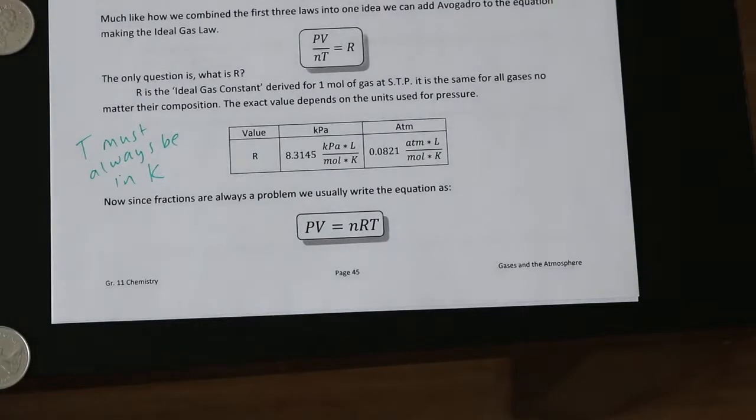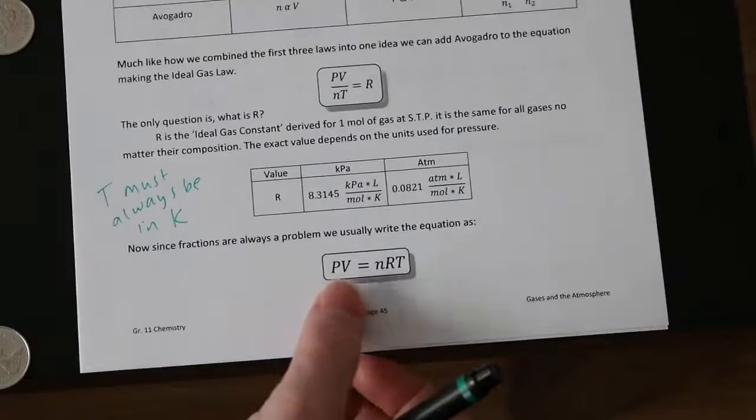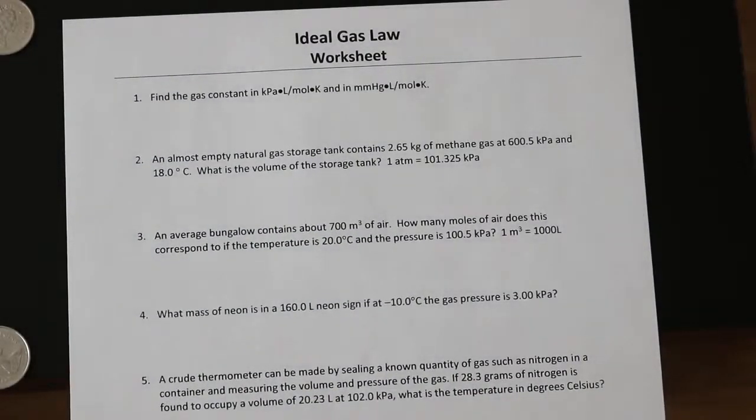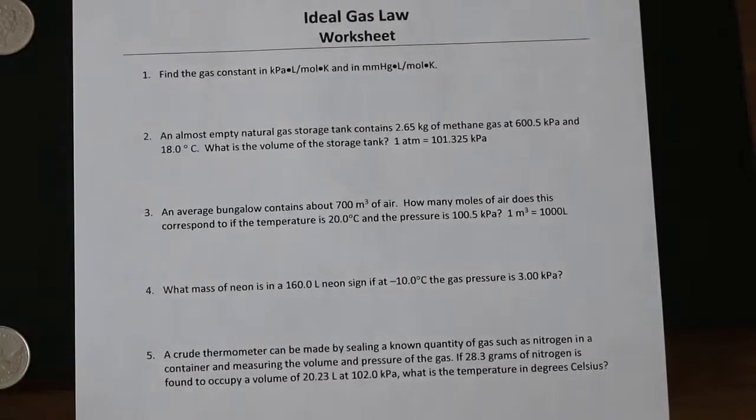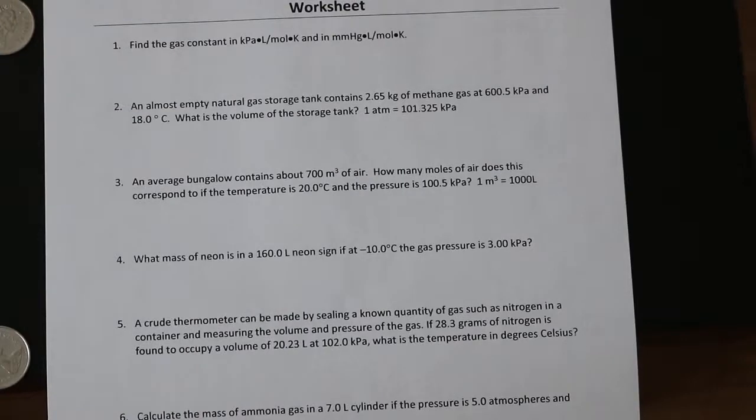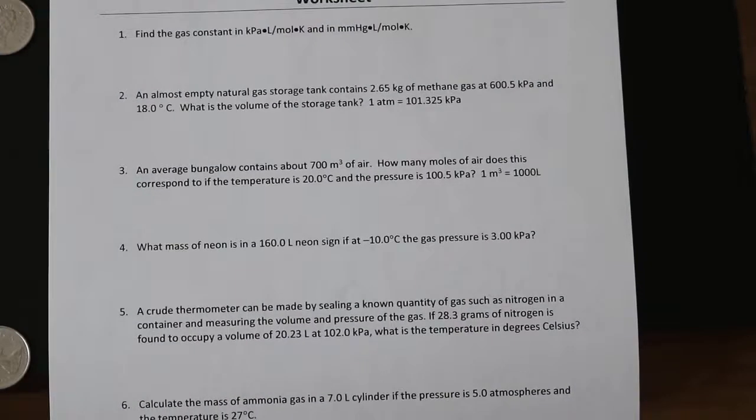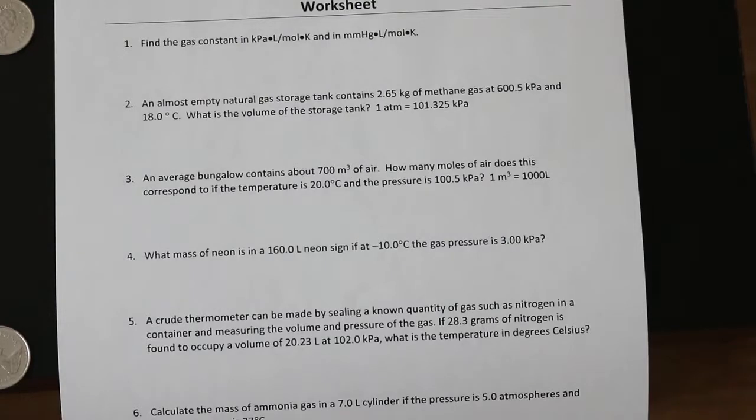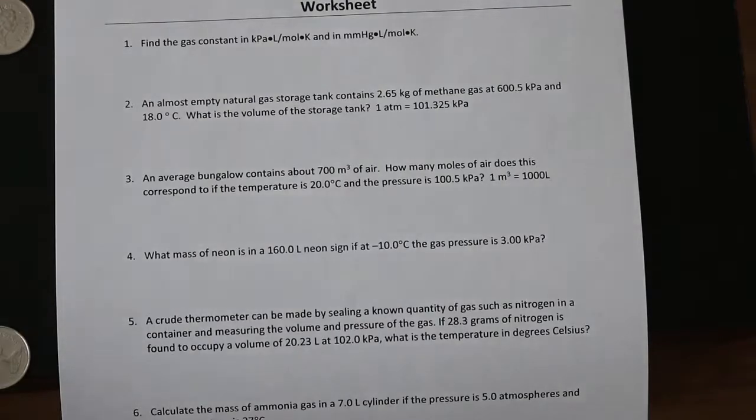Okay, so that's the new equation for us to memorize, PV equals nRT. Let's look at a few examples. And this is on page 45, by the way. So if we look at question number 2, and I'm skipping question 1, because question 1 just involves you writing down the different values of R from page 45. So question 2 says, an almost empty natural gas storage tank contains 2.65 kilograms of methane at 600.5 kilopascals and 18 degrees Celsius. What is the volume of the storage tank? We're told here that 1 atmosphere equals 101.325 kilopascals. So this is question 2 on page 46. I'm just going to do it on a different page of paper.